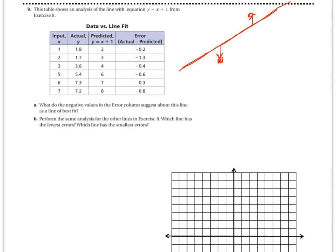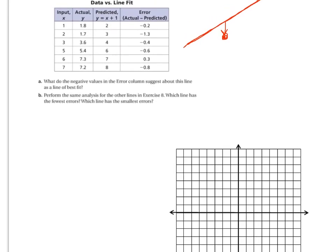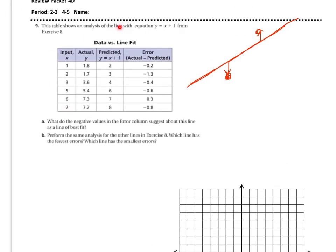Problem B, perform the same analysis for the other line in exercise 8. Which line has the fewest error? Which line has the smallest error? So going back to the other problem and do the same thing as you do right here, it says data versus line fit. Do the same analysis, and which line has the smallest error? Obviously the line with the smallest errors has the best, is the best fit.